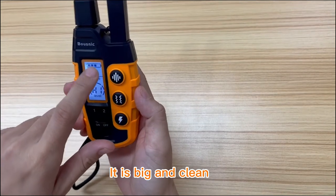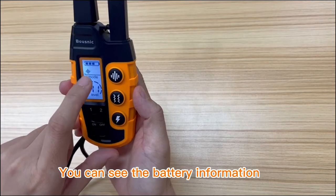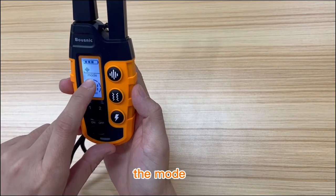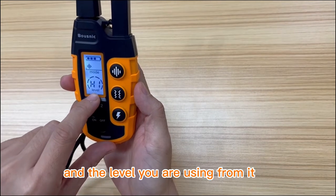This is the LCD screen. It is big and clean. You can see the battery information, the mode, and the level you are using from it.